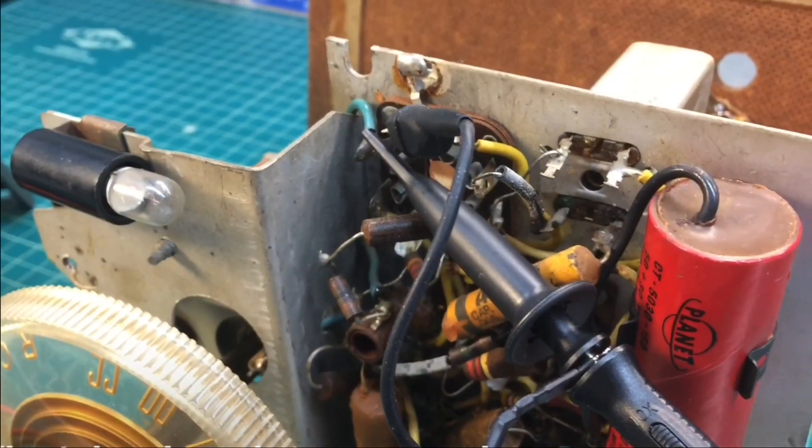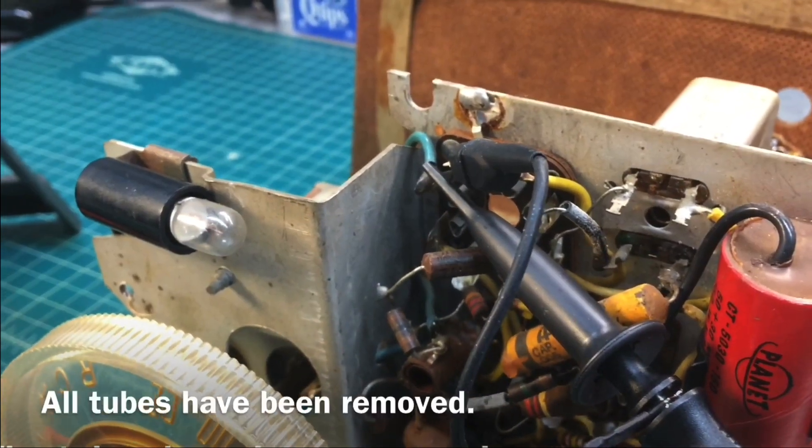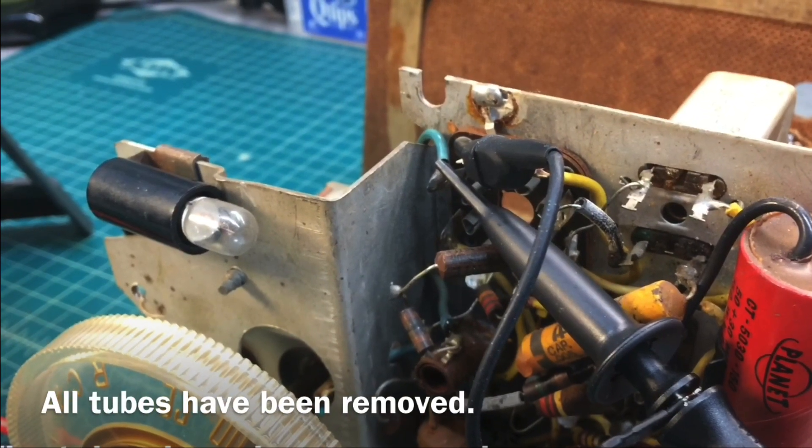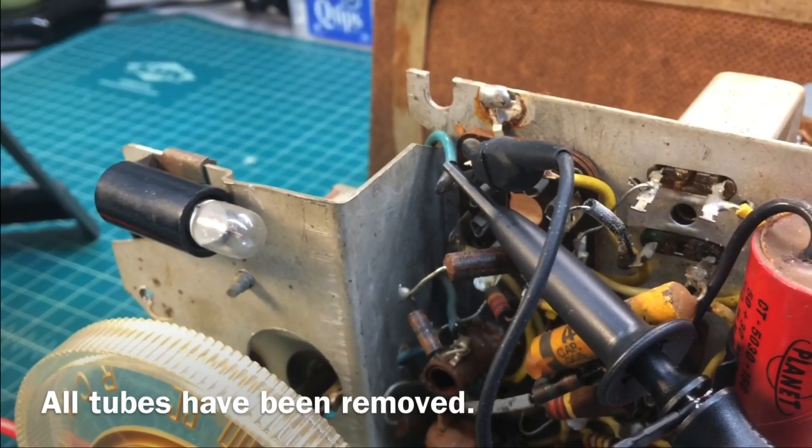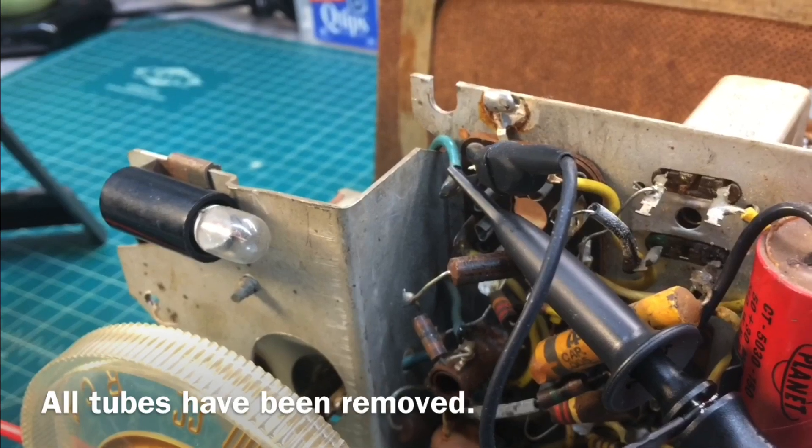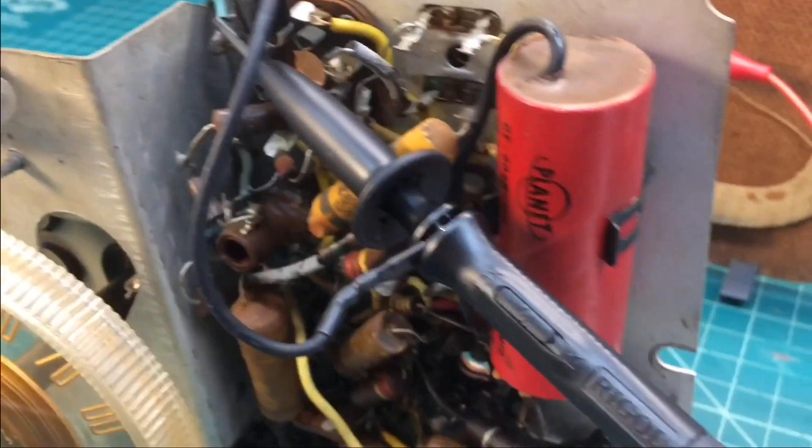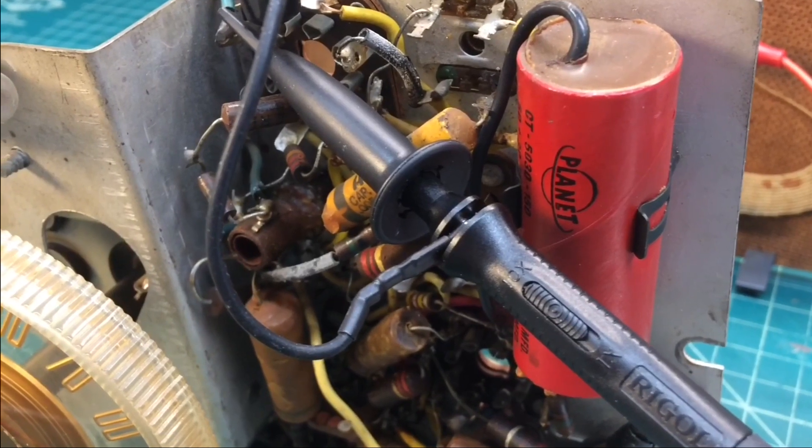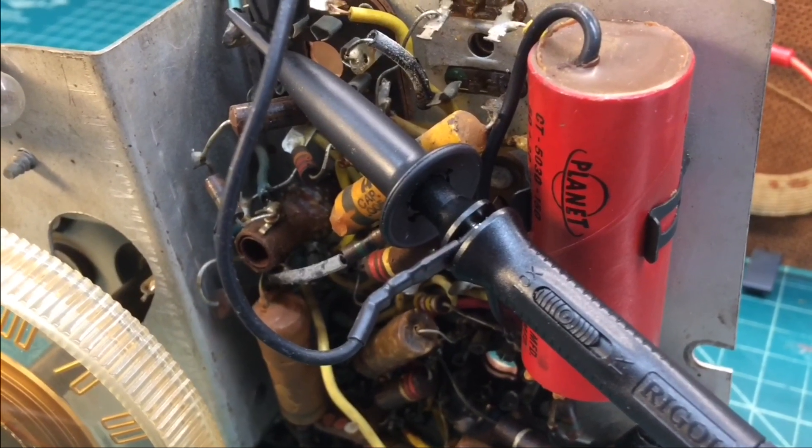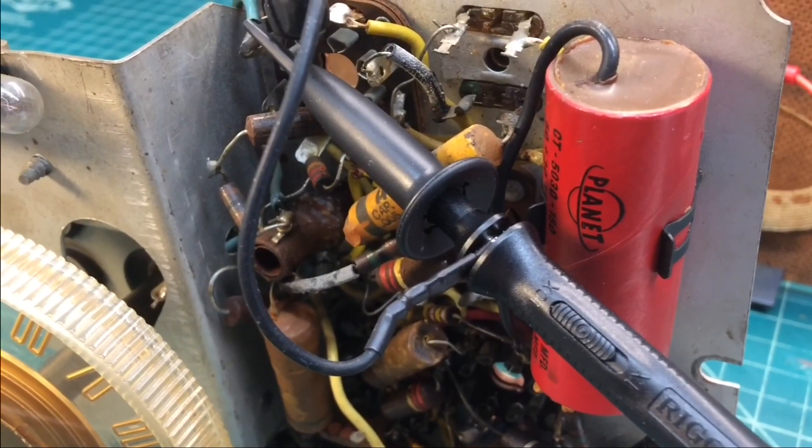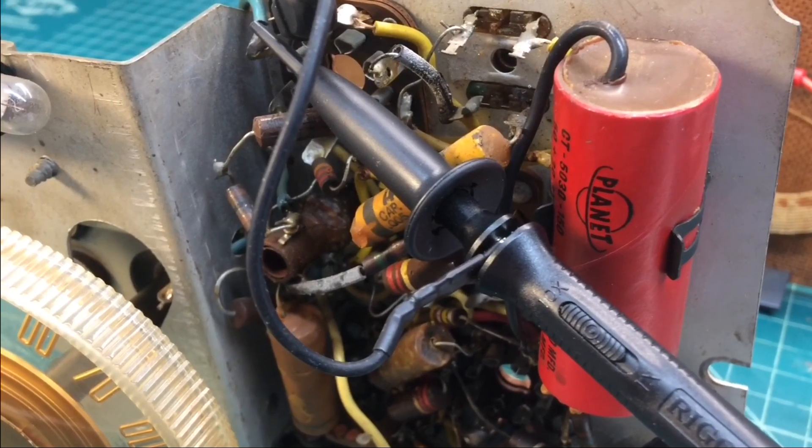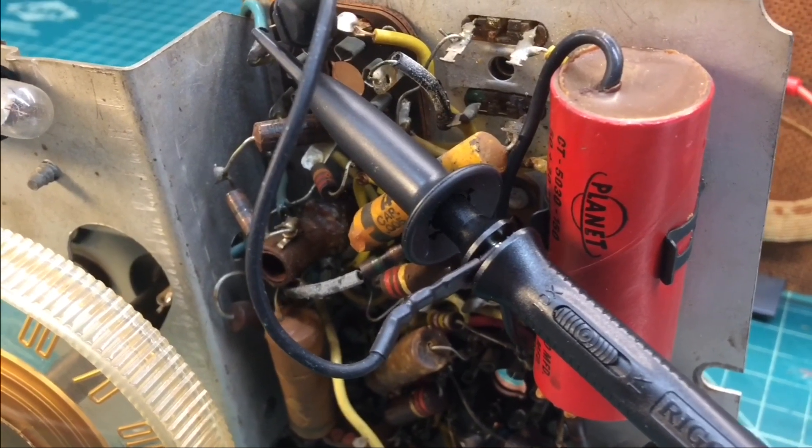You can see I've got my probe attached to pin number eight, which would be the grid of the 12SA7. That being the first detector oscillator or mixer tube. And the other side there going to ground. I'm just using my common 10x probe, and that would give me about 10 megaohms or so, about 10 to 15 picofarads of capacitance.